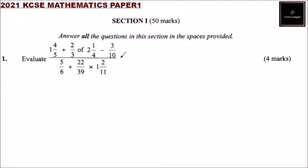Question number 1, we are told to evaluate, we have been given fractions here, 1 and 4 over 5, divided by 2 over 3 of 2 and a quarter minus 3 over 10.